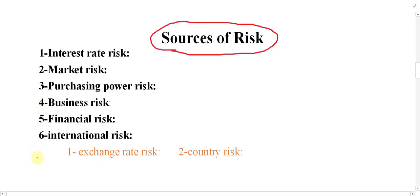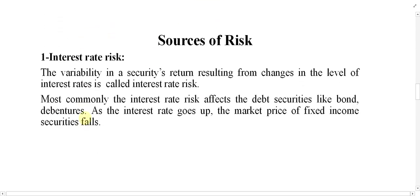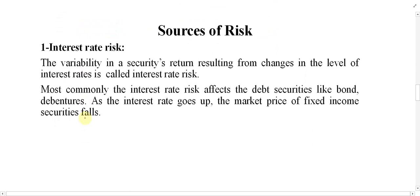We cannot summarize the source of risk into only six types — there might be thousands of sources of risk in the market. If there is a chance of loss because of Ahmad, you can call it Ahmad risk; because of Mahmoud, Mahmoud risk. There are thousands of types. But we have summarized these into six types, and I'm going to explain each one by one in the coming videos.